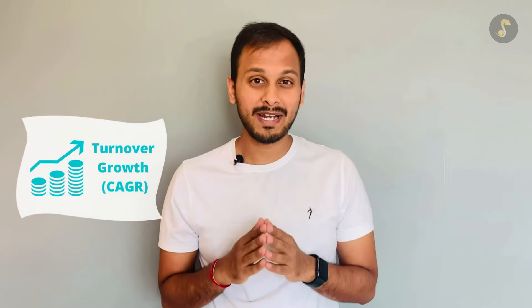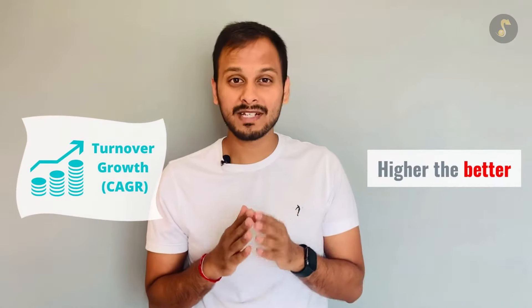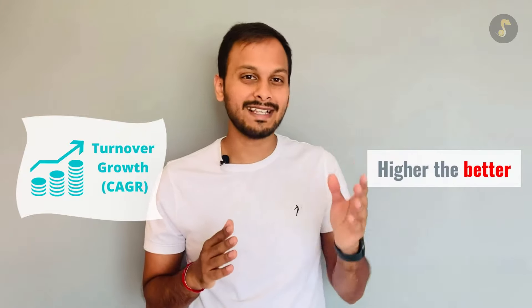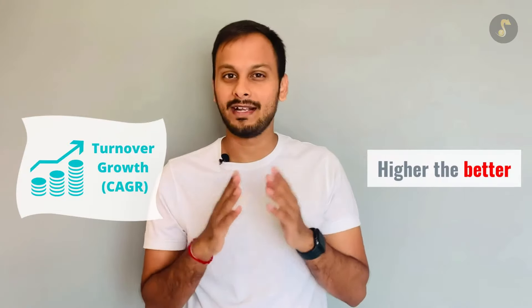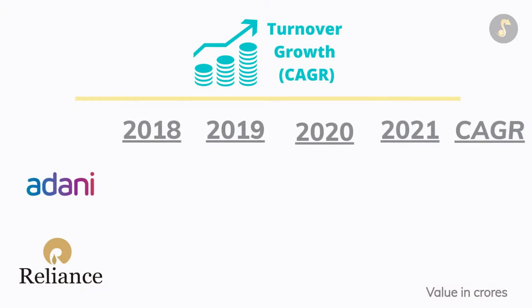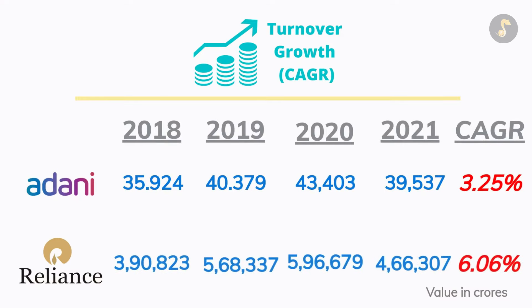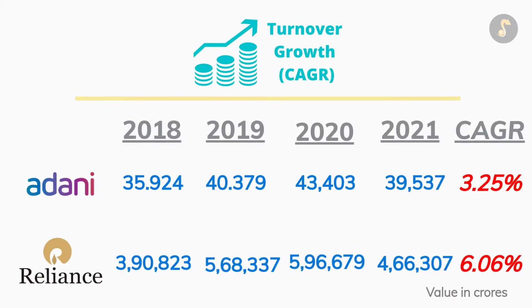Turnover growth assessment: basically higher the better. That means if the turnover growth is more, the stock is better. Adani Enterprises ka last three years ka turnover growth rate raha hai 3.25%, vahe Reliance ka turnover growth rate raha hai 6.06%, making Reliance a better pick under this parameter.